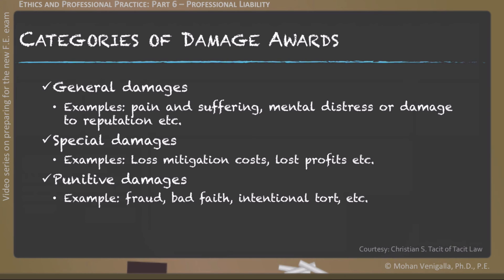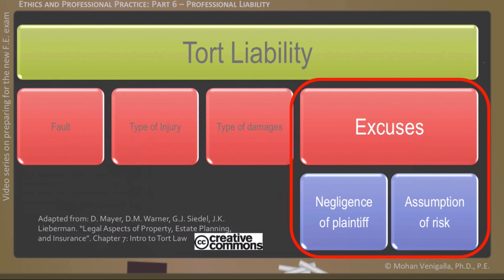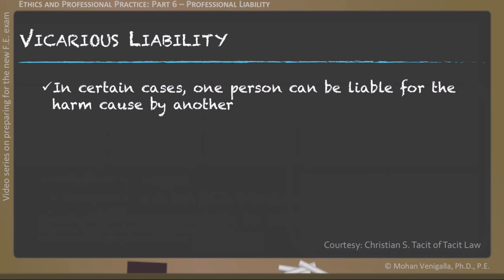In all cases where damages are awarded, plaintiffs have a duty to mitigate their damages. Even where a tort was committed and damages can be assessed, there may be valid excuses for the defendant — such as when the plaintiff himself is negligent, or when the plaintiff knows the risk and assumes it anyway. In certain cases, one person can be liable for harm caused by another person, which is called vicarious liability. One example relevant to professional liability is an employer's liability for the actions or omissions of its employees.